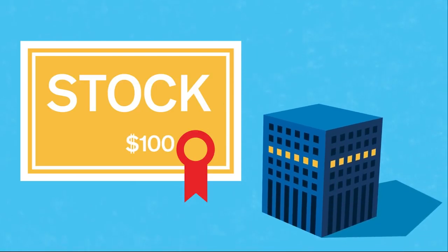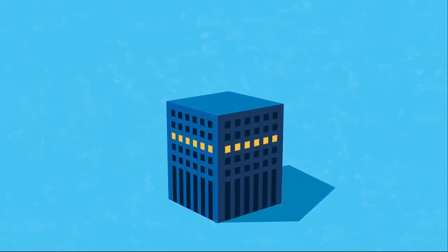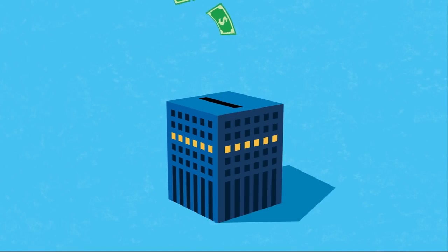These fluctuations determine the amount of profit or loss. Another way to make money is when the company shares its yearly profit with you in the form of a dividend.